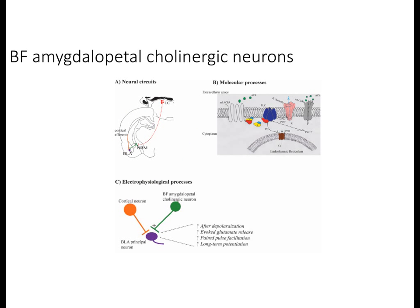This slide summarizes what's known about BF amygdalopetal cholinergic neurons. These neurons reside in the NBM and project to the BLA. They are critical for cued fear memory and trace fear memory in a Pavlovian fear conditioning paradigm, but not important for fear memory in fear potentiated startle. They appear important for contextual fear memory and potentially contextual extinction in the inhibitory avoidance paradigm. BF amygdalopetal cholinergic neurons potentiate input from auditory cortical neurons onto BLA principle neurons — this is the general electrophysiological mechanism by which they modulate fear memory. Mechanisms for extinction memory remain unknown.